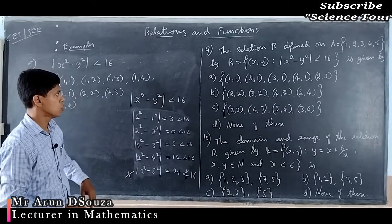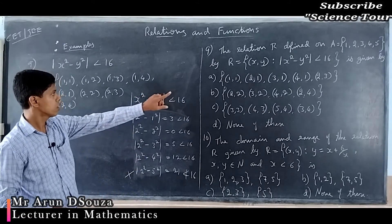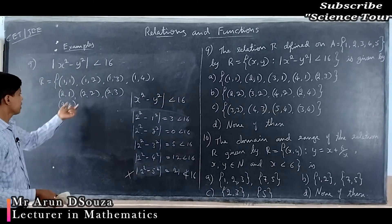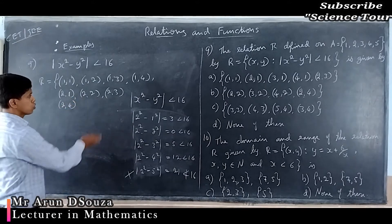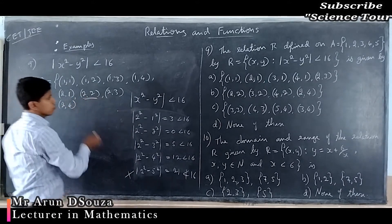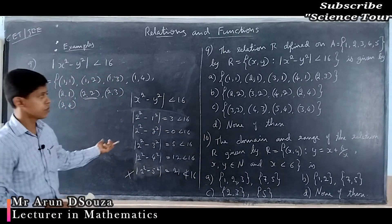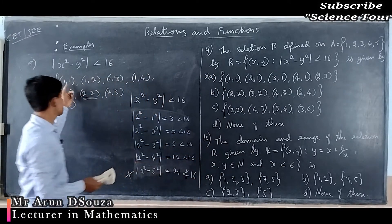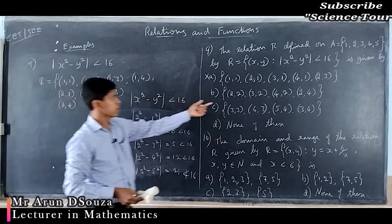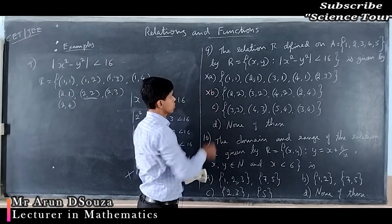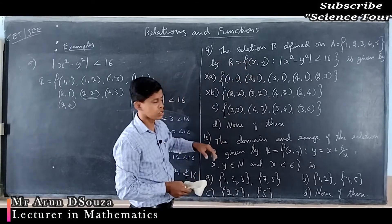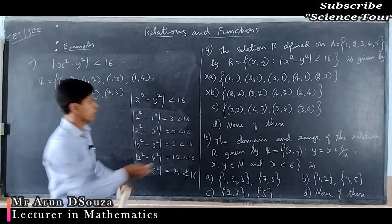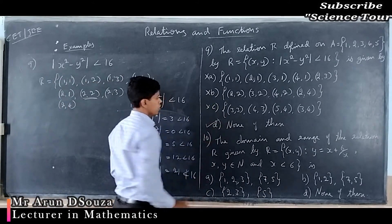Looking at the options: the first option has (1,1), (2,1), (3,1), (4,1), (2,3) but does not include (2,2) — so that cannot be correct. The second option has (2,2) but is missing (1,1), (1,2), etc. The third option also lacks (1,2) and (2,2). Therefore none of these options correctly represent the full relation.